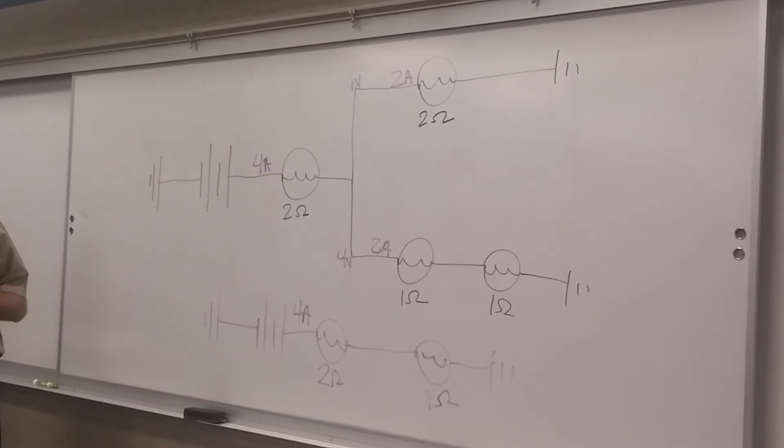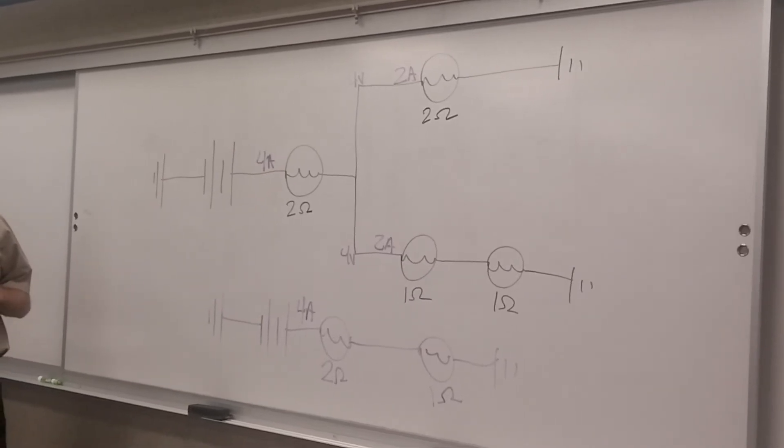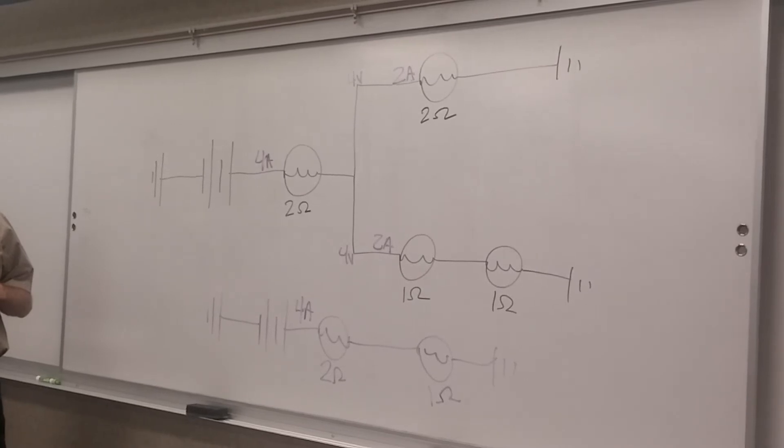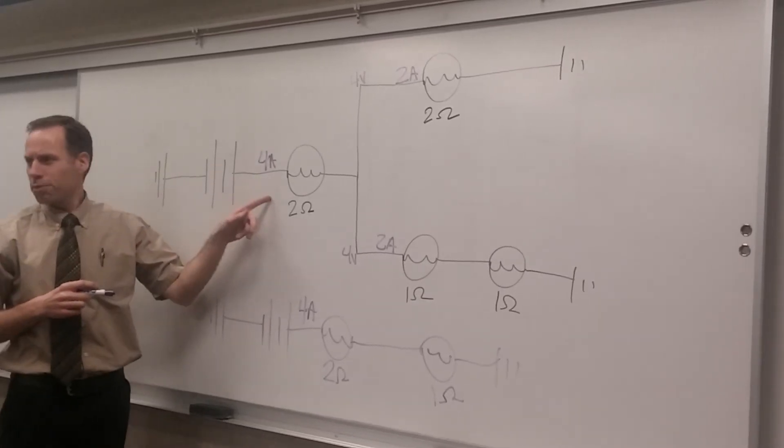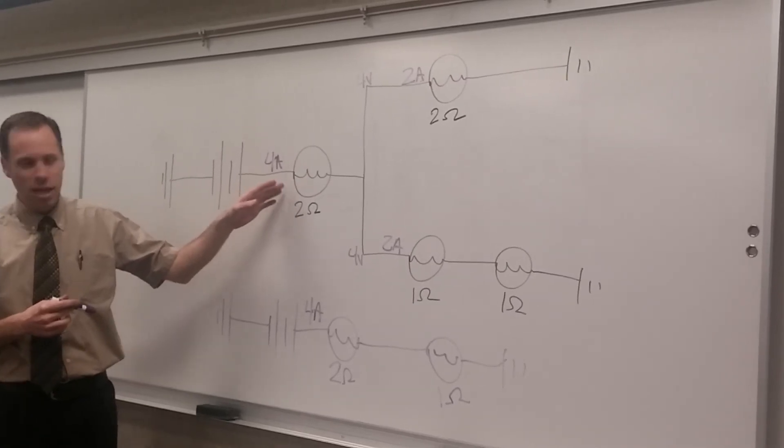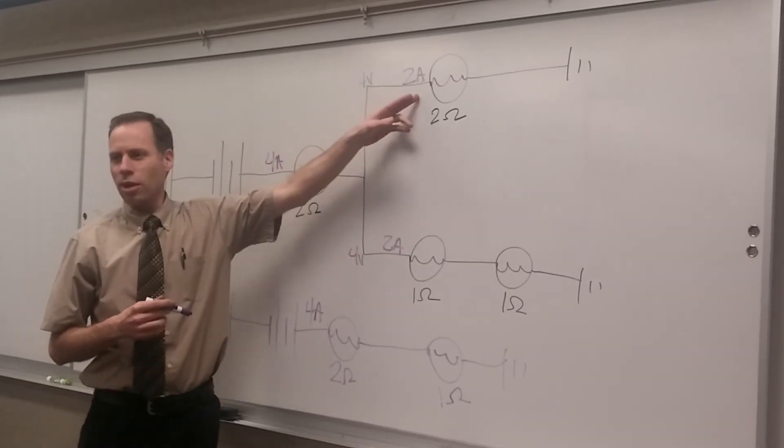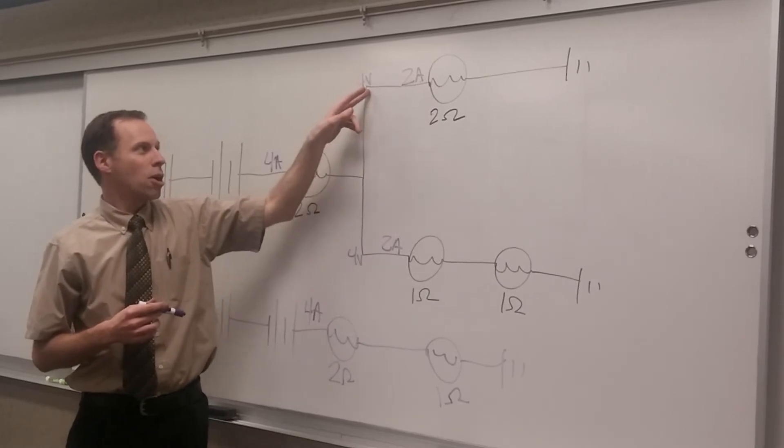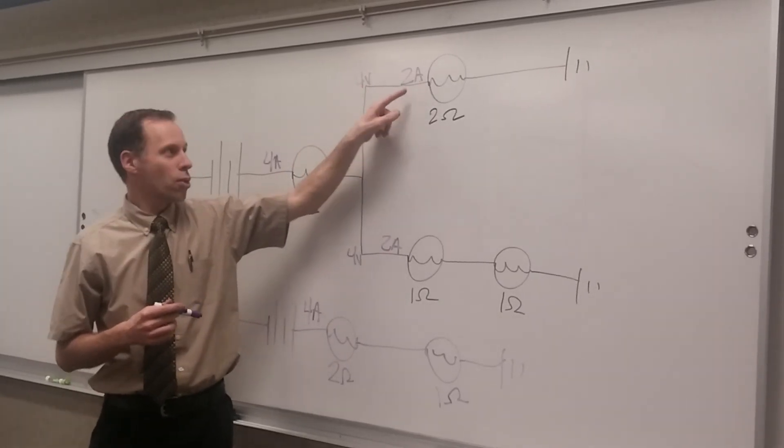Now what's the next question? It says what's the voltage drop across bulb one? We've already answered that. How much voltage is dropped across bulb one? Eight. Eight volts. How much voltage is dropped across this bulb? Four. Four volts gets dropped here, or two times two, right?